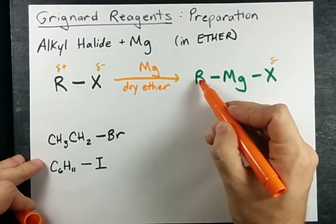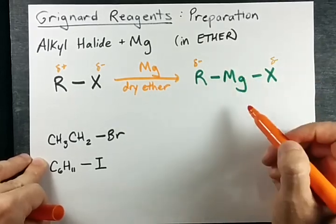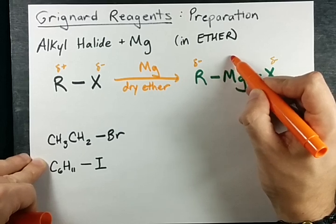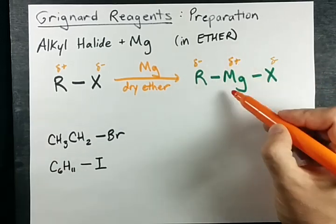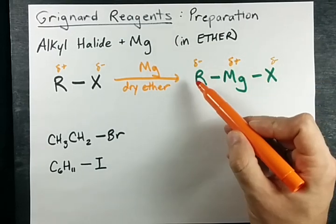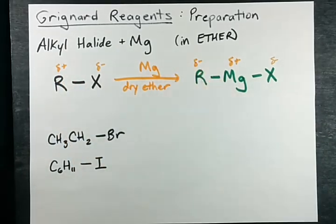But carbon is more electronegative than magnesium, so it is also delta minus relative to the magnesium. Remember, magnesium is a metal, so it donates electron density pretty easily. It gets the positive charge here, or the delta plus I should say, where the R now has the delta minus. It was delta plus, now is delta minus.